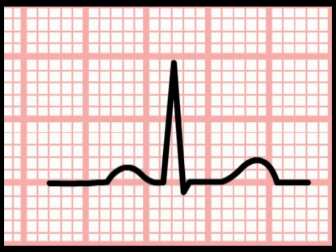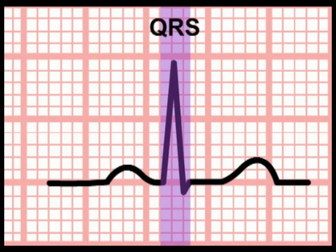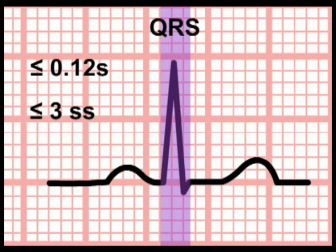The next key value you need to learn is the duration of the QRS complex, which represents the time taken for ventricular depolarization to be completed. The conducting system of the ventricles is highly specialized tissue designed to transmit the depolarization wave rapidly. With an intact conducting system, ventricular depolarization is complete within 0.12 seconds, or 3 small squares. A normal QRS complex is equal to or less than 3 small squares in width — the width of the QRS complex is central to interpreting life-threatening arrhythmias.